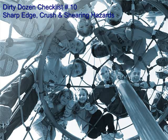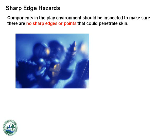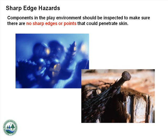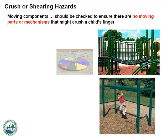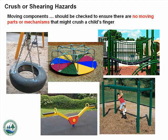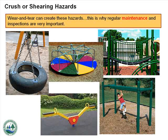Number 10: Sharp Edge, Crush, and Shearing Hazards. Components in the play environment should be inspected to make sure there are no sharp edges or points that could penetrate skin — an obvious hazard that must be removed before children may use the equipment. Moving components such as suspension bridges, track rides, merry-go-rounds, seesaws, and swings should be checked to ensure there are no moving parts that might crush or shear a child's finger or other body part. Wear and tear can cause an existing playground to develop these hazards, which is why regular maintenance and inspections are very important.